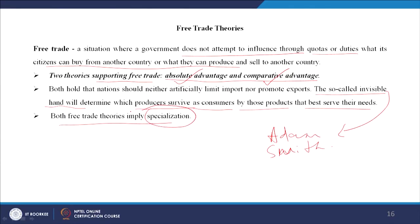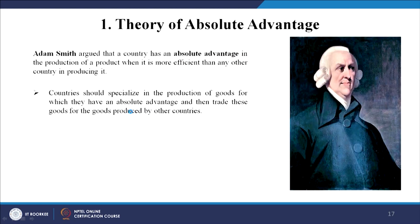Both trade theories imply specialization — to specialize in something, to be good and expert in it. The theory of absolute advantage: Adam Smith argued that when a country is more efficient than any other in producing a product, countries should specialize in production of goods for which they have an absolute advantage and trade these goods for goods produced by other countries. Country A is good at X, Country B is good at Y — A should make only X and trade for Y, and B should make only Y and trade for X.